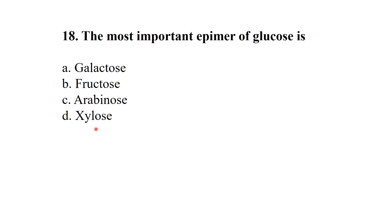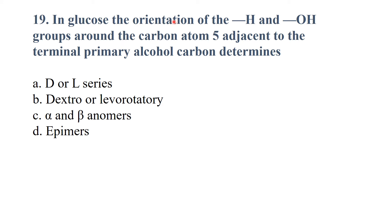The most important epimer of glucose is galactose. In glucose, the orientation of hydrogen and hydroxyl groups around carbon atom five, adjacent to the terminal alcohol carbon, determines the D/L series. So it belongs to the D/L series.